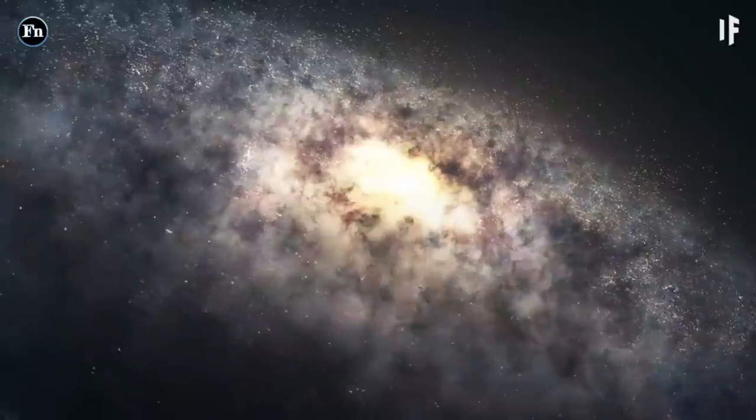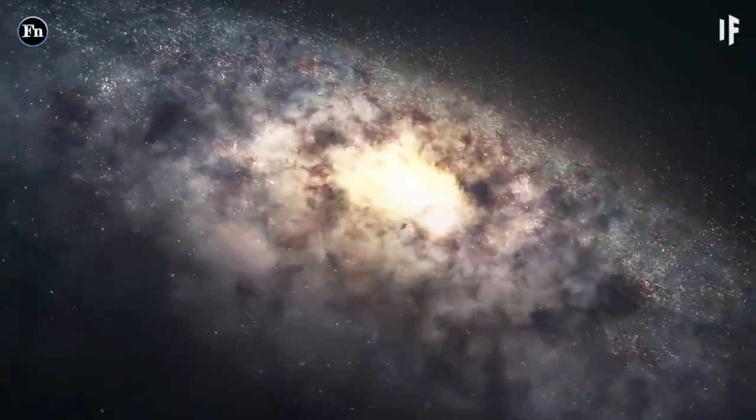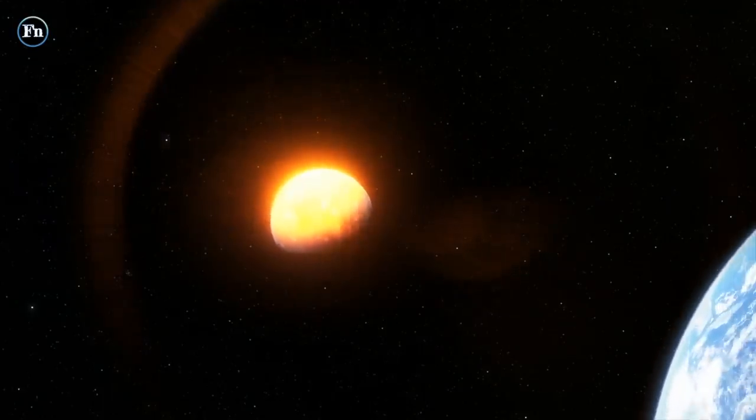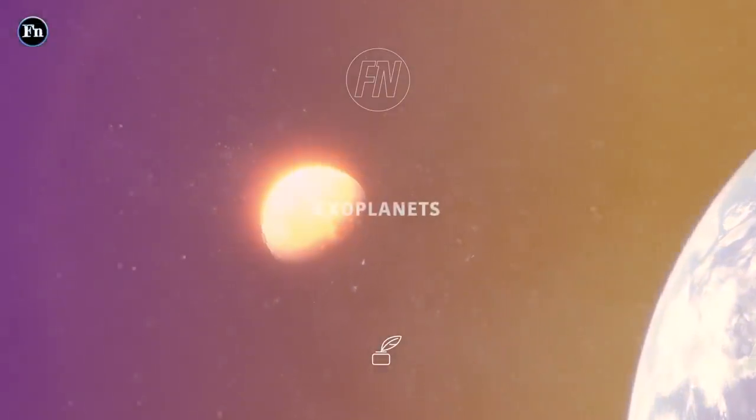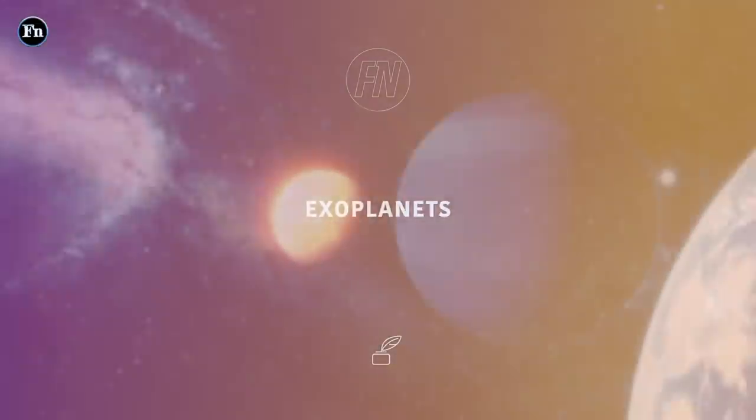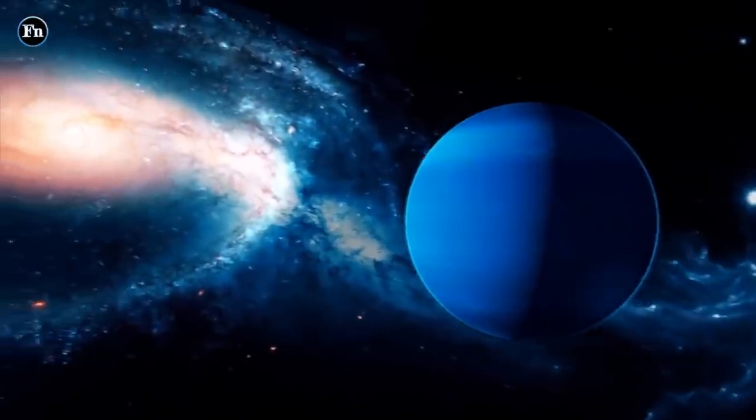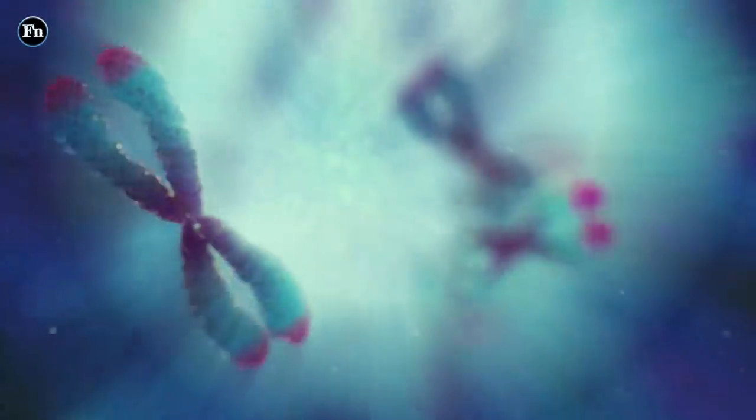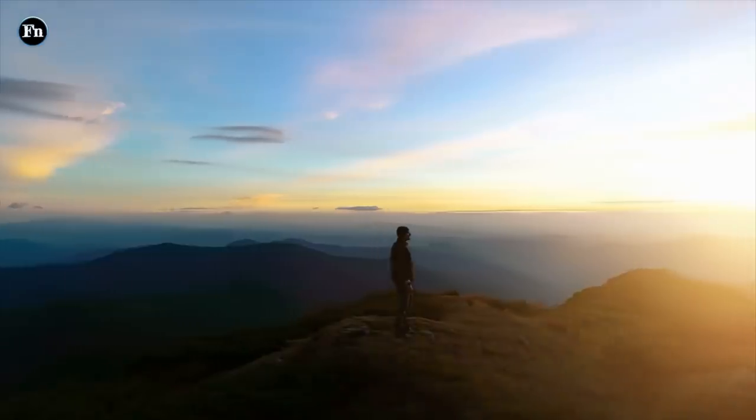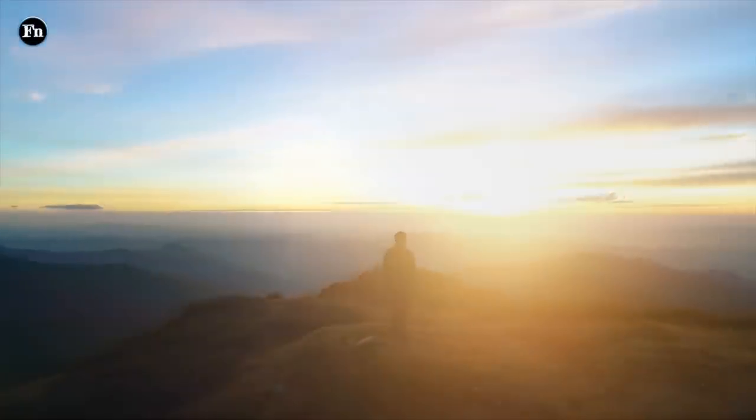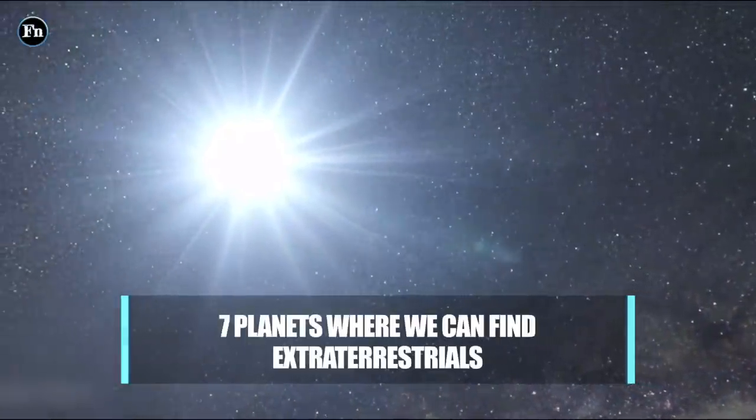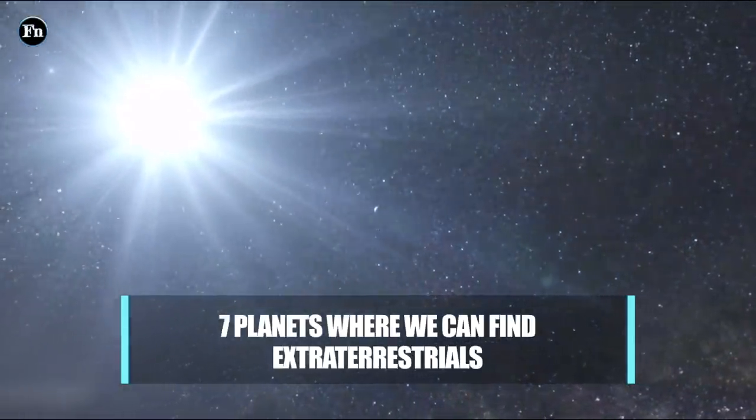There are countless stars in our galaxy alone. Certainly you can't count them. Near each of the stars you may find a planet. They are called exoplanets and some of them may be in the habitable zone and have everything for life to form on them. Don't believe us? Here are seven examples of planets where we can find extraterrestrials.